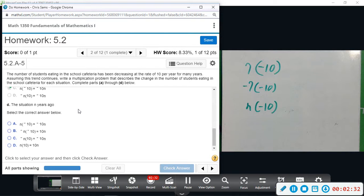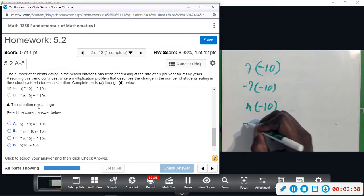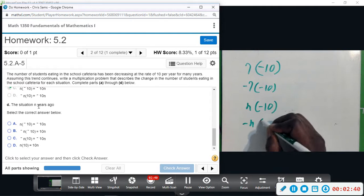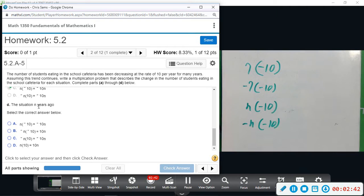And then D says the situation N years ago. So similar to part B, we would do negative N times negative ten. And that would give us, for N years ago, how many students were eating in the cafeteria. How many more. Represented by B.